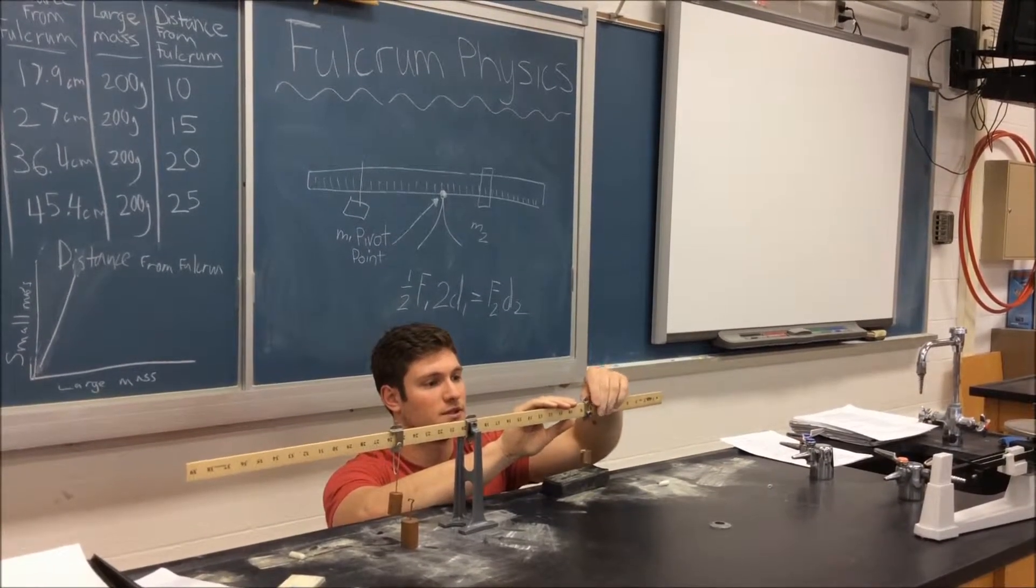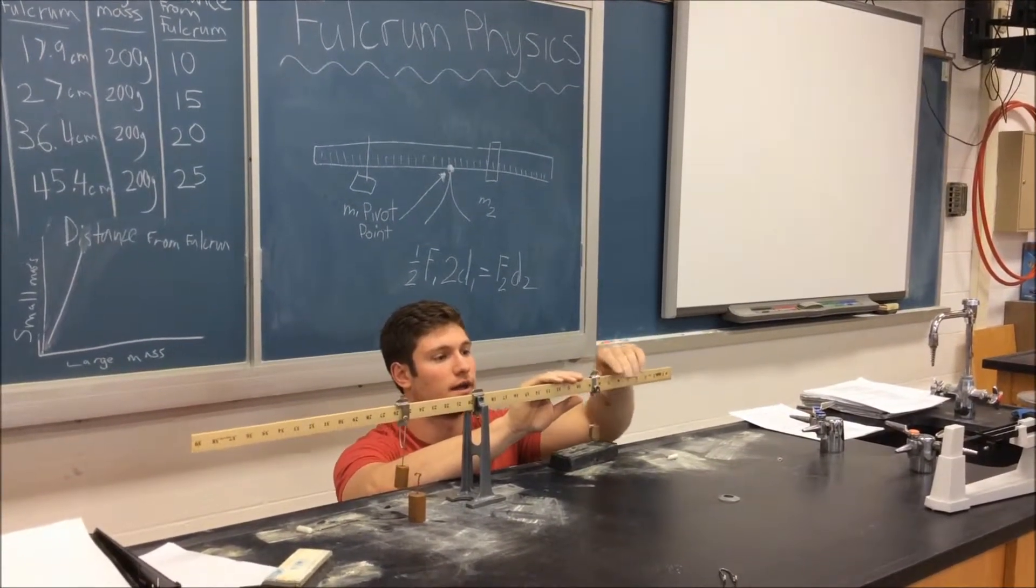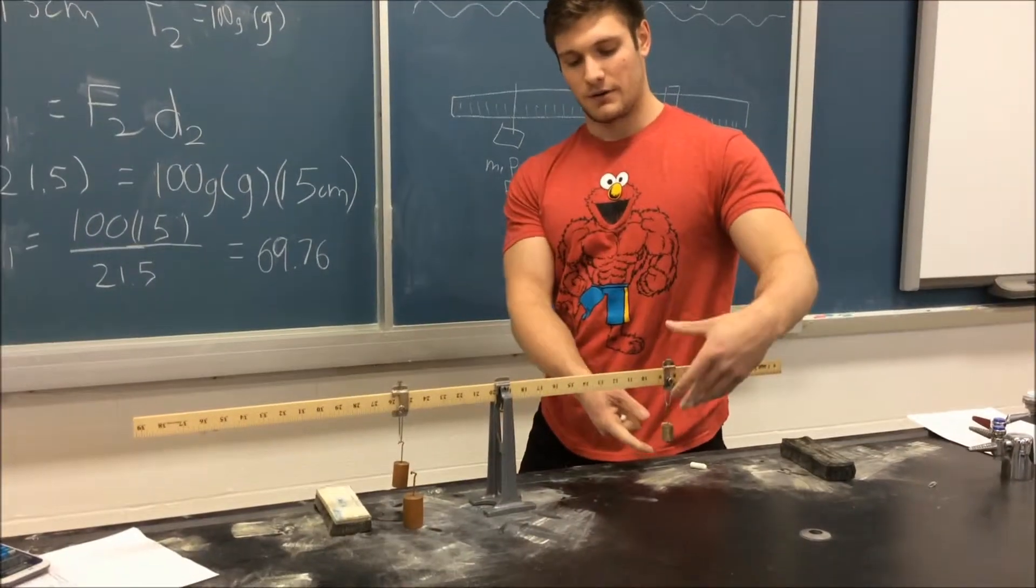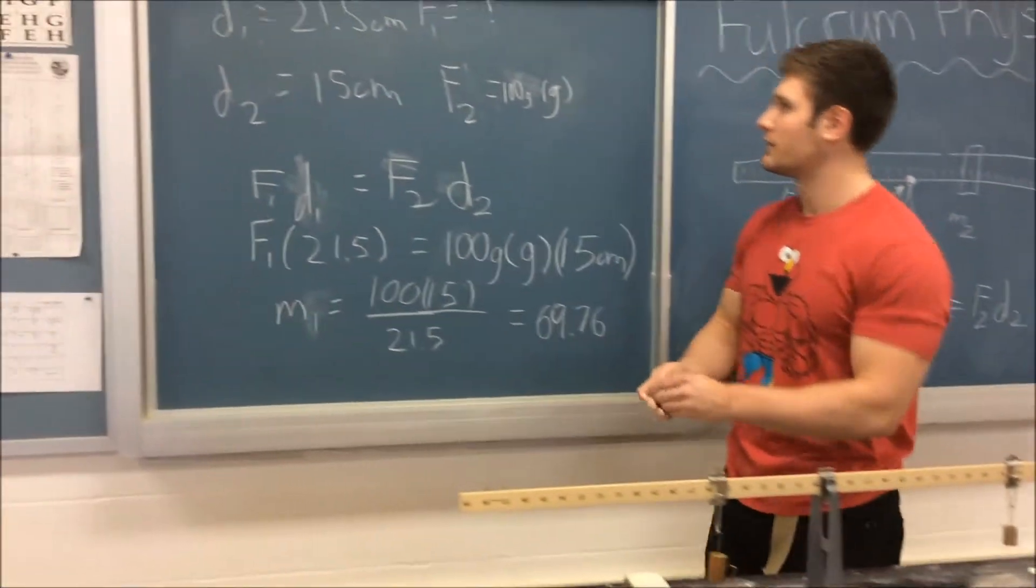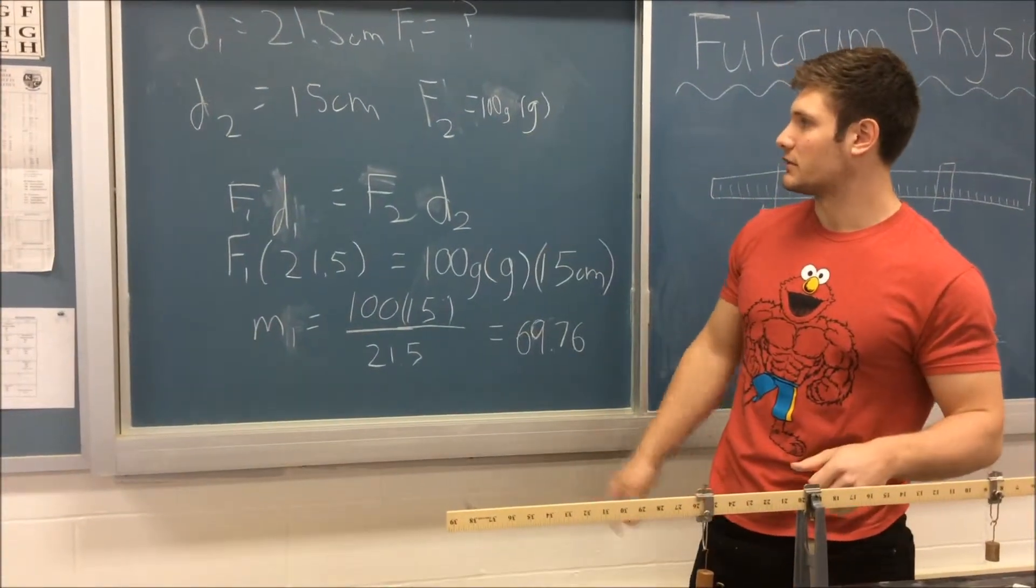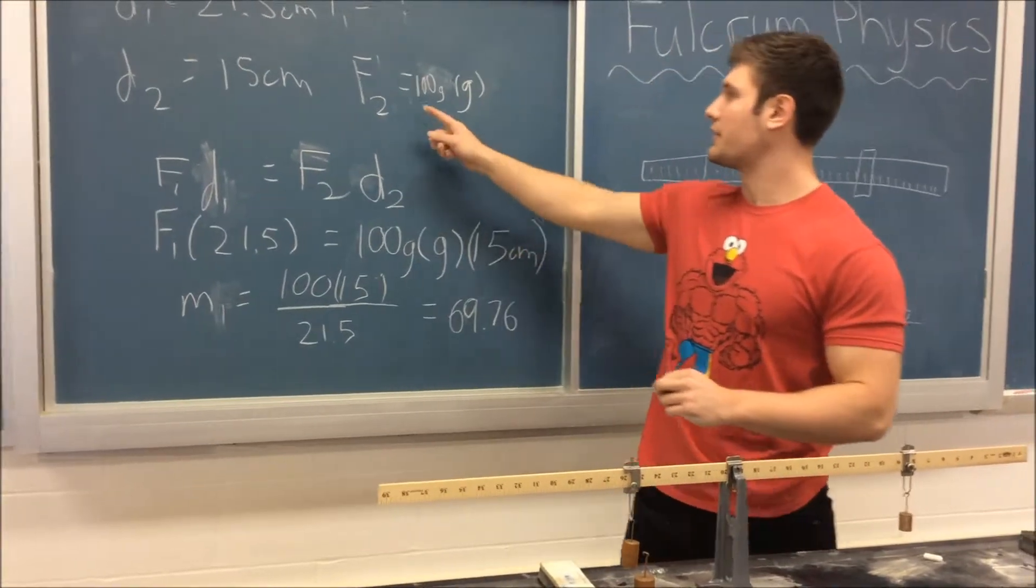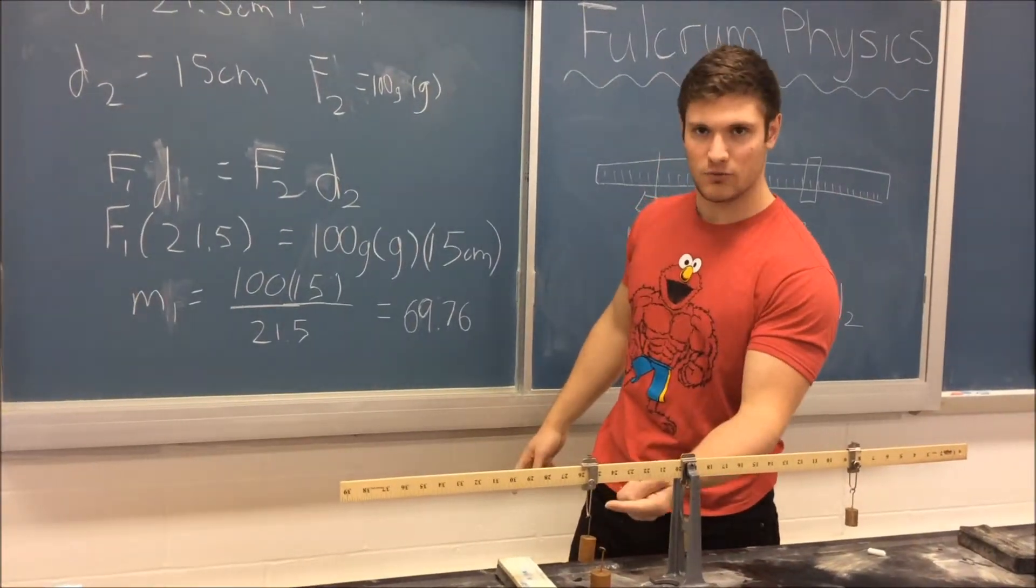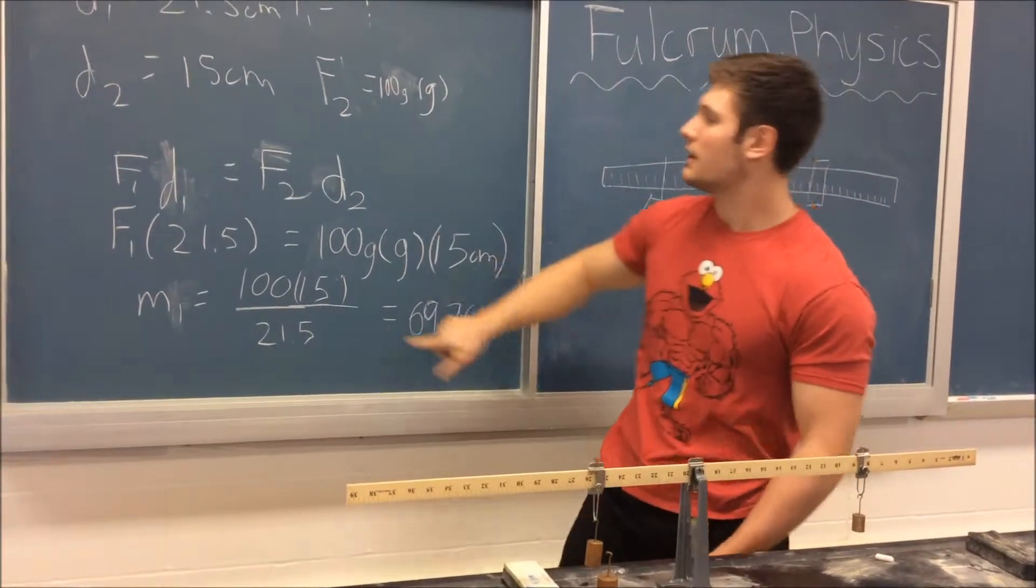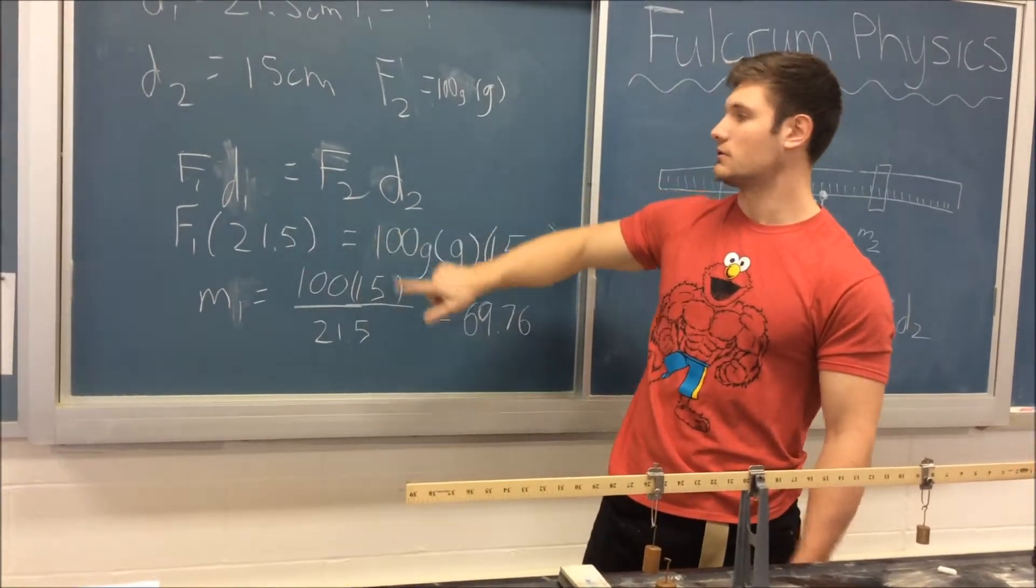And that's the money right there. So when you take this information that we got from our unknown mass and the distance from the fulcrum, you can plug it in. We know that D1 of the unknown mass is 21.5 centimeters, we know that D2 from the known mass is 15 centimeters, we know that F2 is 100 grams from our known mass times the acceleration to gravity. When we look at our equation, F1 times D1 is equal to F2 times D2 for equilibrium.